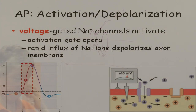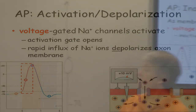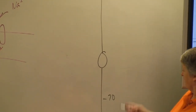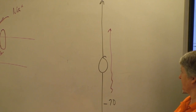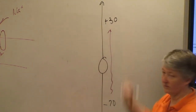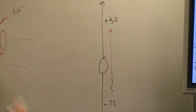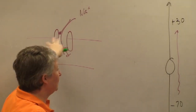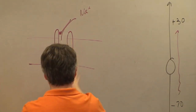The membrane depolarizes. I'm sitting here at minus 70, sodium rushes in. Once I get up to about plus 30, remember these channels are voltage-gated. So once I get to about plus 30, the back door — the inactivation gate — closes.